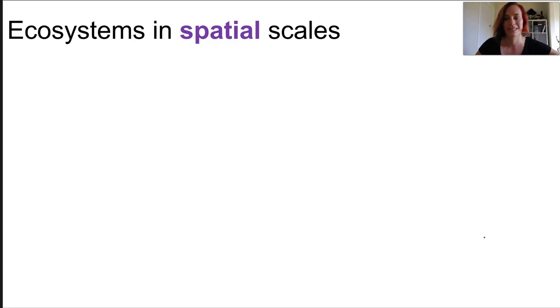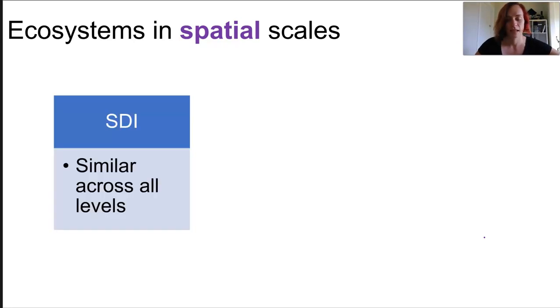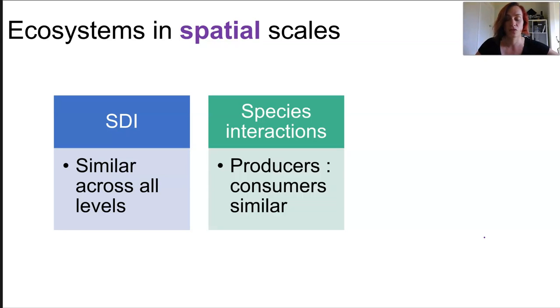Despite the spatial scale, we consider the diversity of a particular ecosystem is similar at all levels. This is because SDI is calculated using a ratio of the species present to the number of individuals and their population. In terms of species interactions, the ratio of producers to consumers is pretty similar at all levels. Other species interactions work relatively the same way across all spatial levels.